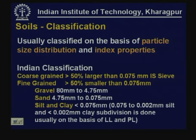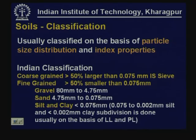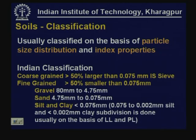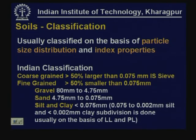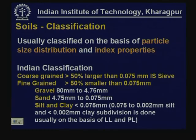In the Indian classification, soil is considered coarse grained if more than 50% of the particles are larger than 75 micron size, and fine grained if more than 50% of the particles are smaller than 75 microns. Soil is designated as gravel (80 mm to 4.75 mm), sand (4.75 mm to 75 micron), silt (75 micron to 2 micron), or clay (less than 2 micron) depending on particle size.